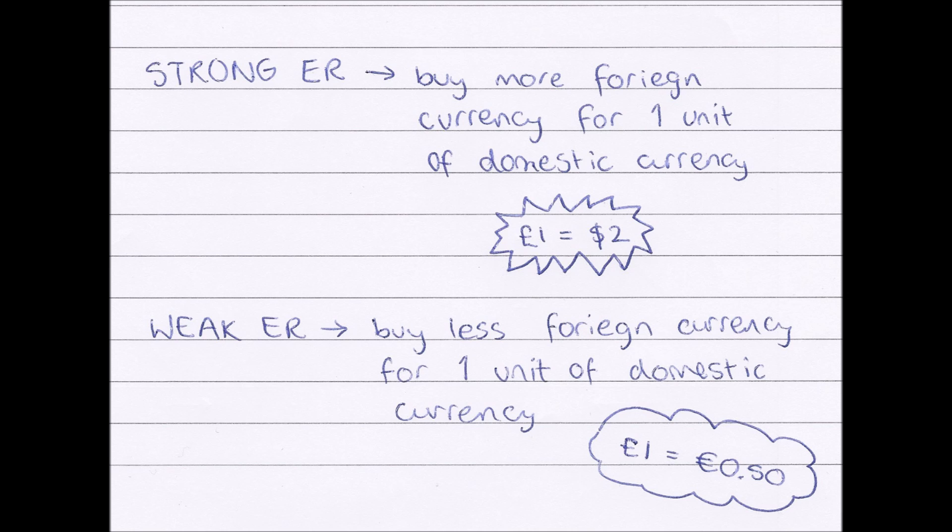Before we move on, you may have heard the terms strong exchange rate and weak exchange rate. A strong exchange rate is when you can buy more foreign currency for one unit of domestic currency — for example, one pound equals two dollars. A weak exchange rate is when you can buy less foreign currency for one unit of domestic currency — for example, one pound equals fifty cents, or zero euros fifty.